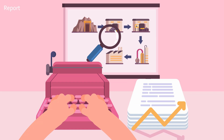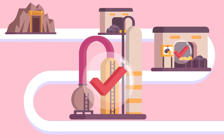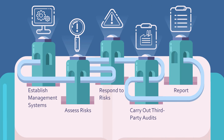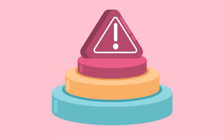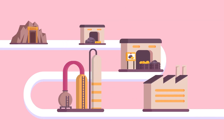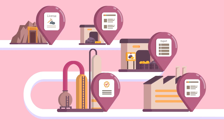Following the five steps of the OECD Guidance offers reasonable assurance that your company is sourcing responsibly, even from high-risk areas. The higher the identified risk, the more intensive the due diligence and monitoring. By working closely with your suppliers, you can progressively improve due diligence practices.